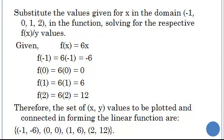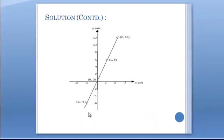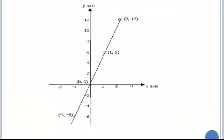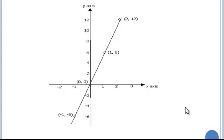Here is the graph. We plotted each point and drew a line through all of them — that is the graph of the linear function f(x) equals 6x. The procedure is the same for both parts and does not change.